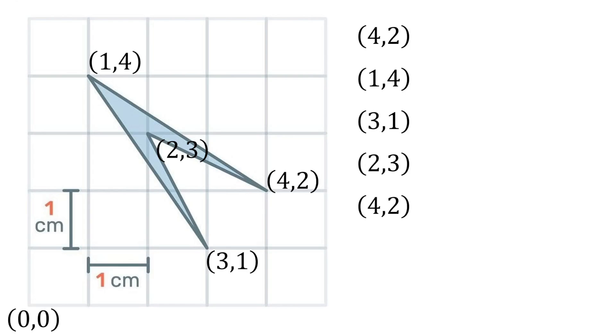Then this is called the shoelace theorem because I will be doing a crisscross pattern for my calculations. And if you look at it, the numbers could represent the holes in the shoe and the crisscross lines of green and red are the shoelace. This is why it's called the shoelace theorem.